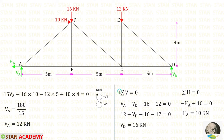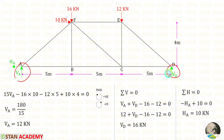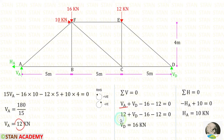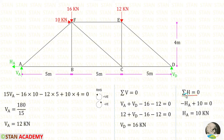Now let us apply the rule sigma V equals 0 and find VD. VA and VD are acting upwards, so both of them are positive. The loads 16 and 12 are acting downwards, so both of them are negative. For VA we can apply 12, and this 12 will cancel out. Finally, VD equals 16 kilo newton.